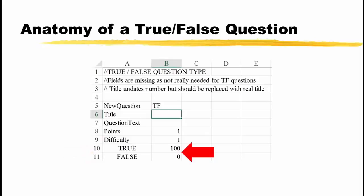Finally, cell B10 currently contains the number 100, and cell B11 contains a number 0. You put a 100 beside the correct answer and a 0 beside the incorrect answer. No other numbers should be used.